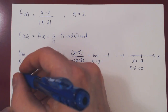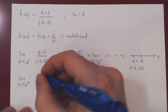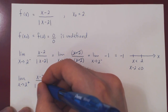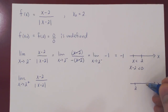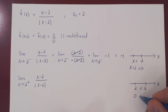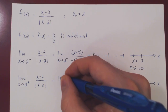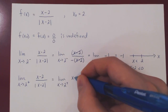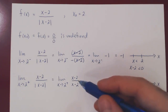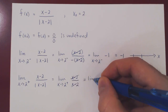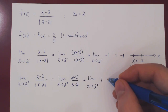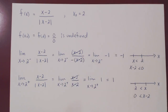For the limit from the right, we again have a 0 over 0 case. Since x is approaching 2 from the right, x is slightly larger than 2, so x minus 2 is already positive — we can drop the absolute value directly. We cancel top and bottom, and we're left with simply 1. As x approaches 2 from the right, the limit is 1. So the limit from the right exists and equals 1.